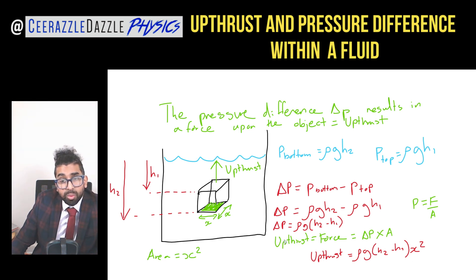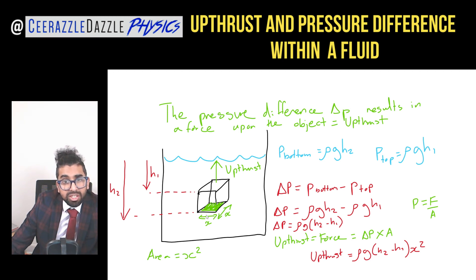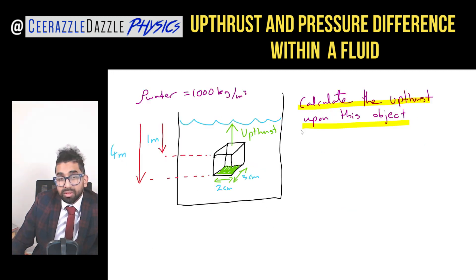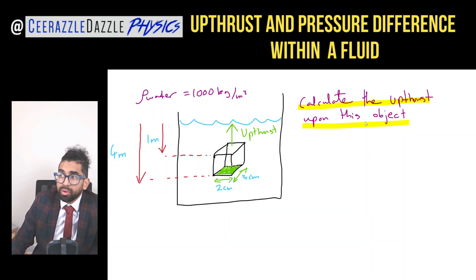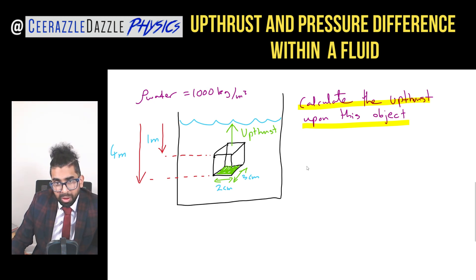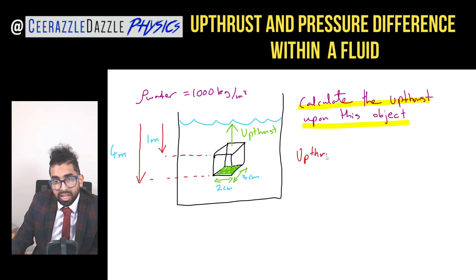So there you go — in order to work out the upthrust upon this object it is simply equal to the pressure difference times the area, where the area is the cross-sectional face of the cube. Now let's tackle a question based upon this principle. Calculate the upthrust upon this object. The upthrust is going to be equal to delta p times by the area.